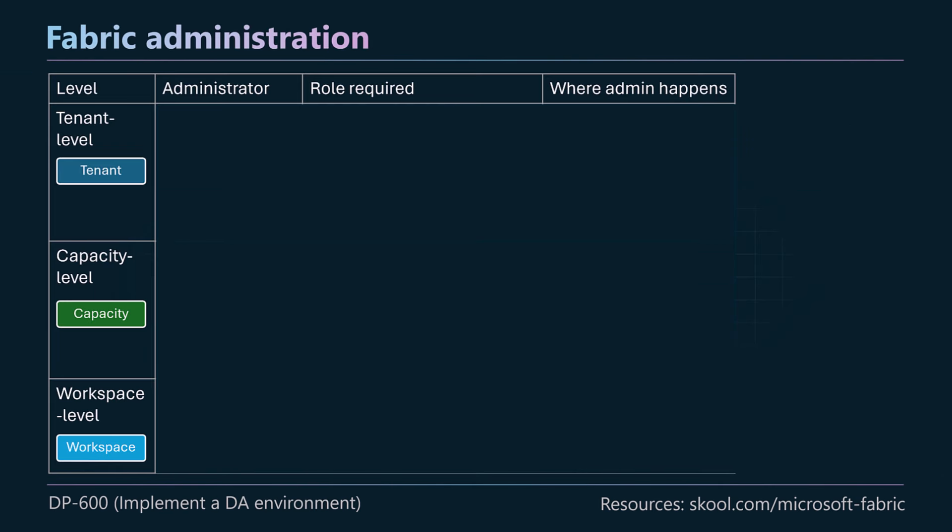Here we have a table — it's not complete yet, we're going to walk through it together. We have three top levels: tenant level, capacity level, and workspace level. On the right-hand side we'll go through who the administrator is, what role they require, and where the admin happens — where the settings are that they need to work with at each level.